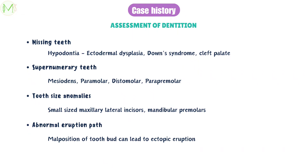We need to check for tooth size anomalies, where discrepancy between tooth size and arch size can lead to malocclusion. The most common anomalies are small-sized maxillary lateral incisors and smaller-sized mandibular premolars. An increased size of the teeth will result in crowding, and a decreased size will result in spacing. Abnormal eruption path should be noted, as malposition of the tooth bud can lead to ectopic eruption — where the tooth erupts at the wrong site. Permanent maxillary first molars and mandibular incisors are frequently affected. Also, premature loss or retention of deciduous teeth can lead to malocclusion. Premature loss causes loss of space and derangement of occlusion, while retained deciduous teeth leave no space for permanent teeth to erupt. Primarily, canines and second molars are retained.